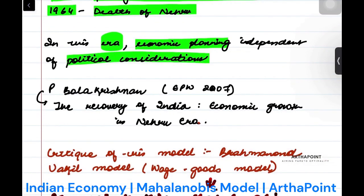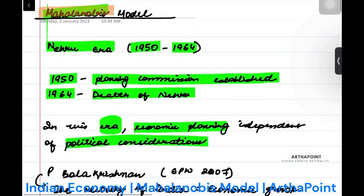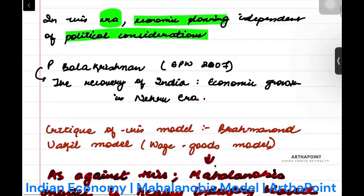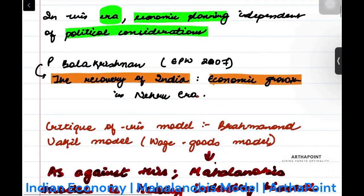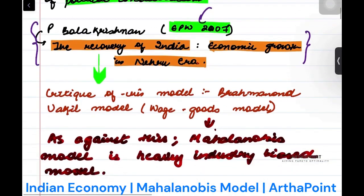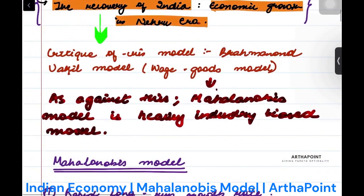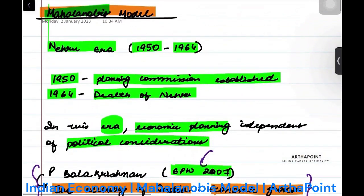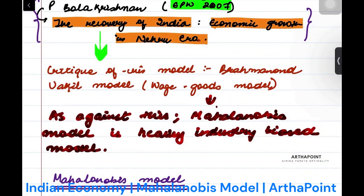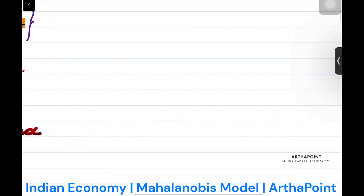Then there is a very beautiful paper on this Mahalanobis model, basically called the recovery of India economic growth in Nehru era. It is there in EPW 2007. I will give you the gist. First we will understand what is Mahalanobis model, but the critique or criticism of this Mahalanobis model is called Brahmanand Vakil model.